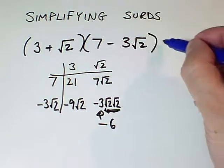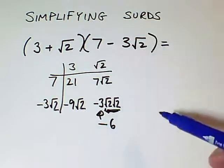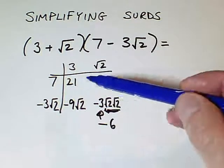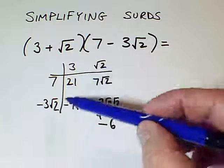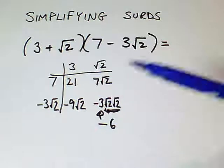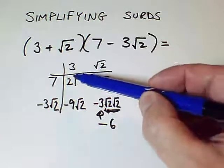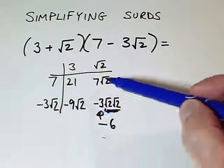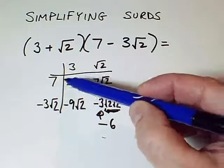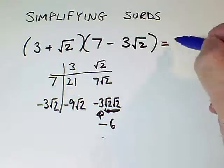So now we're ready to actually write down the answer. The answer is going to come in two parts because you'll see that because the root 2 times root 2 simplified, I've only got two kinds of expression: whole numbers and multiples of root 2. In terms of the whole numbers, 21 minus 6, that's 15.